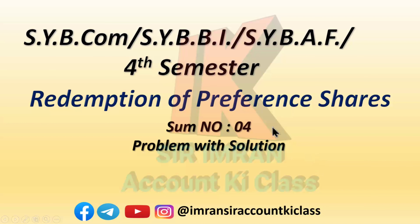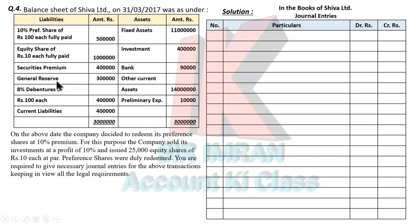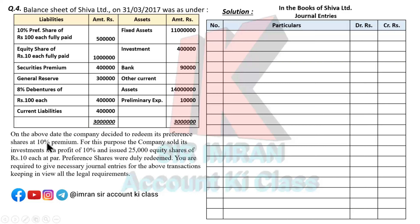Let's go to Question Number 4. The balance sheet of Shiva Limited on 31st March 2017 is given. Liabilities include preference share capital, equity share capital, security premium, general reserve, debentures, and current liabilities. Assets are also given. The company decided to redeem its preference shares at a premium of 10%. Face value is ₹100, so 10% means ₹10 premium per share.